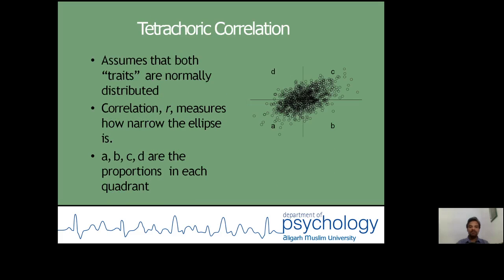Tetrachoric correlation assumes that both traits or variables under study are normally distributed. If you look into this scatter plot, how narrow the ellipse is, the correlation coefficient will be high.